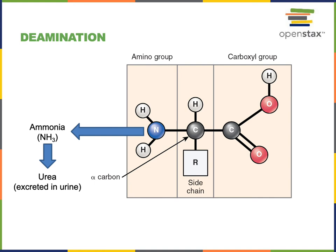The amino group, when removed from an amino acid during deamination, is converted to ammonia. And ammonia, if it accumulated at high levels in our blood, is a relatively toxic chemical that can cause denaturation of proteins. Therefore, in the liver, ammonia will be converted to urea, which is a less toxic nitrogenous waste that can then be transported in the blood. And urea will be removed from the blood by the kidneys and excreted from the body in the urine.